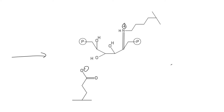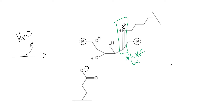After the previous step, I eliminated a water. So now I have my Schiff base, and again I have a partial positive charge down here, which is pretty reactive and is going to allow me to actually break the bonds between carbon-3 and carbon-4 of this sugar.